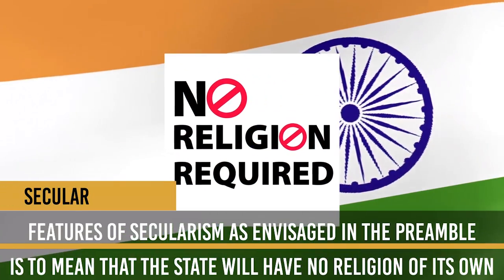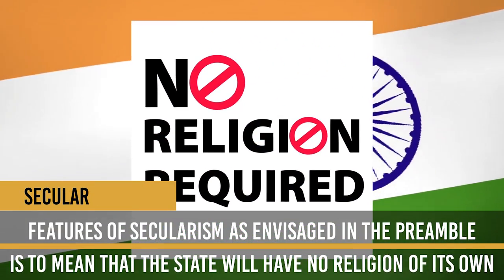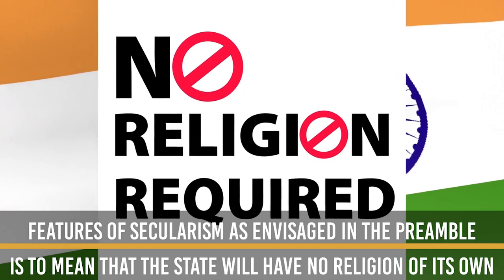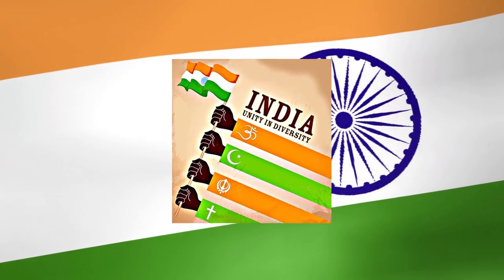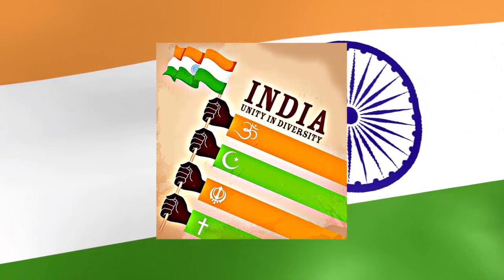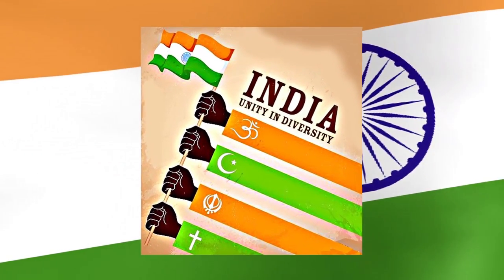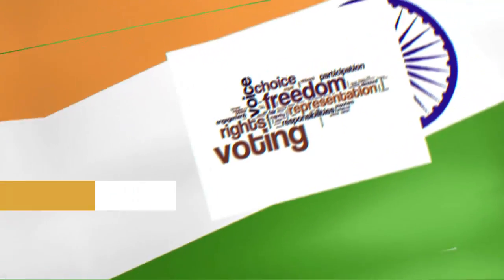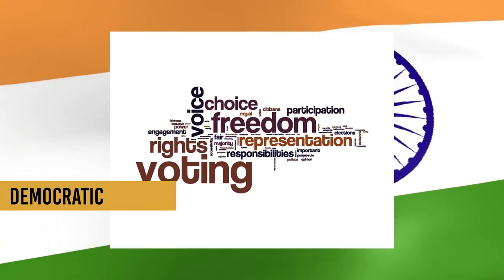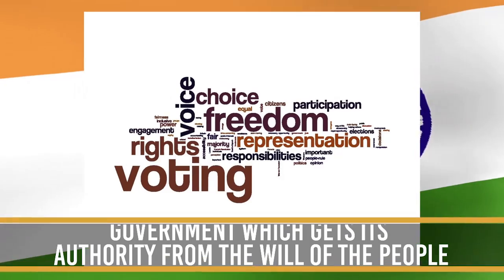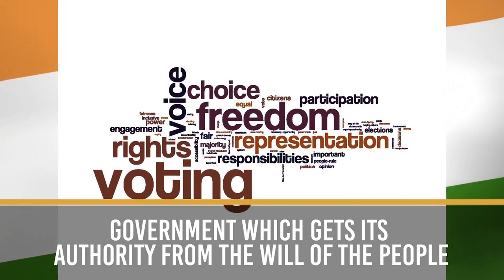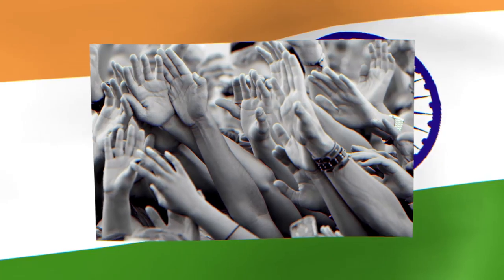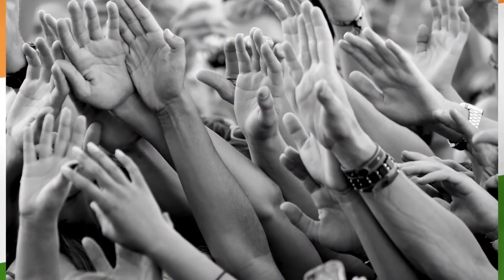Secular: The features of secularism as envisaged in the Preamble mean that the state will have no religion of its own, and all persons will be equally entitled to the freedom of conscience and the right to freely profess, practice and propagate the religion of their choice. Democratic: Democratic indicates that the Constitution has established a form of government which gets its authority from the will of the people. The rulers are elected by the people and are responsible to them.